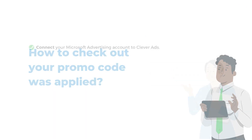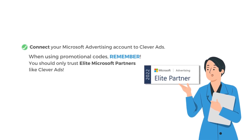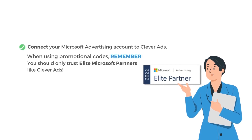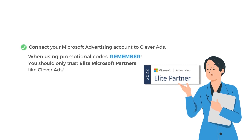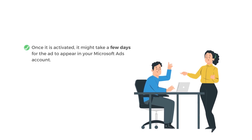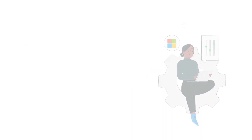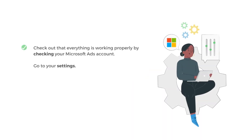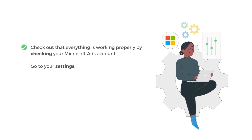Connect your Microsoft Advertising account to Clever Ads. When using the promo codes, remember, you should only trust elite Microsoft partners like Clever Ads. Once it's activated, it might take a few days for the ad to appear in your Microsoft Ads account. Check out that everything is working properly by checking your Microsoft Ads account.